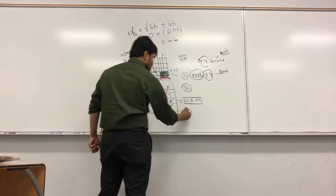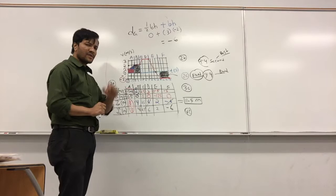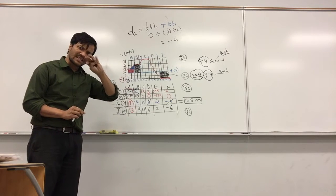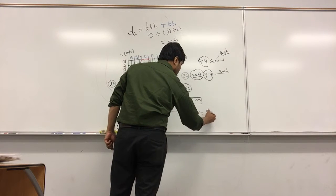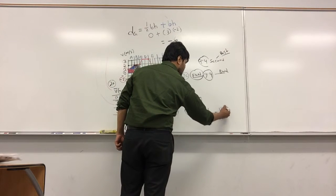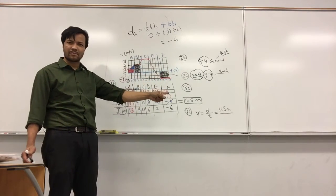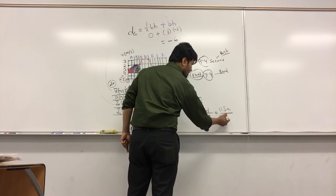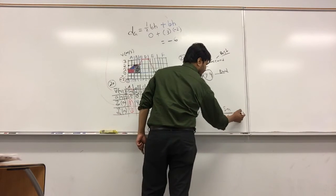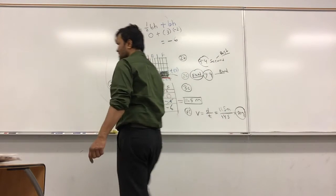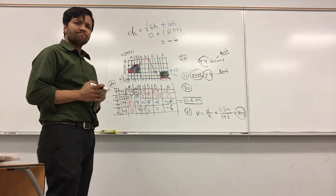The final question asked for the object's average velocity over the whole trip. Average velocity = total displacement / total time = 11.5 meters / 14 seconds ≈ 0.82 meters per second. The next question was even easier.